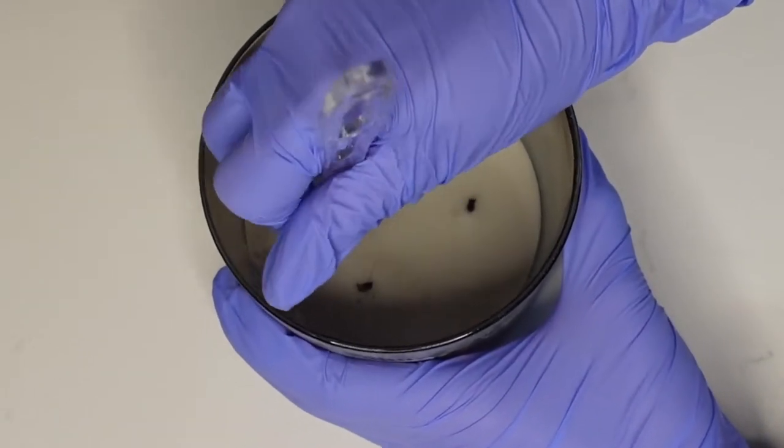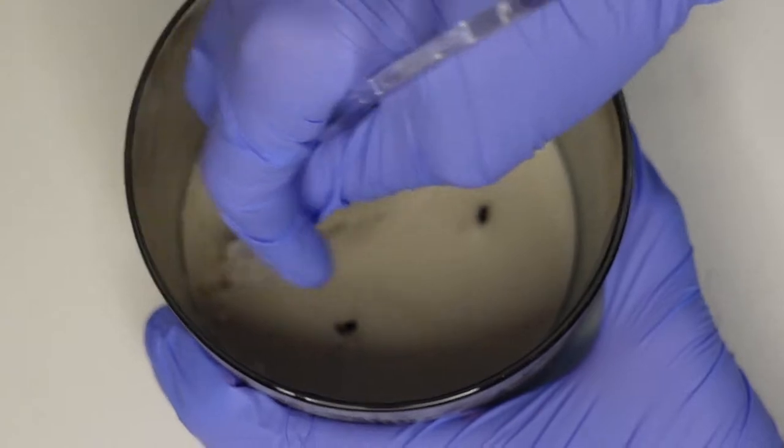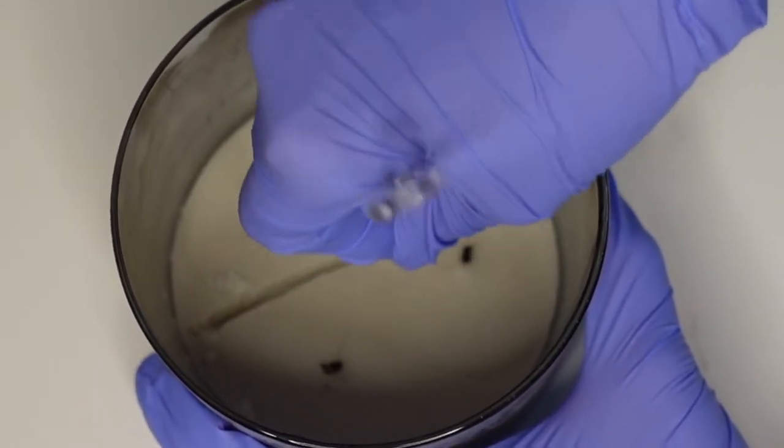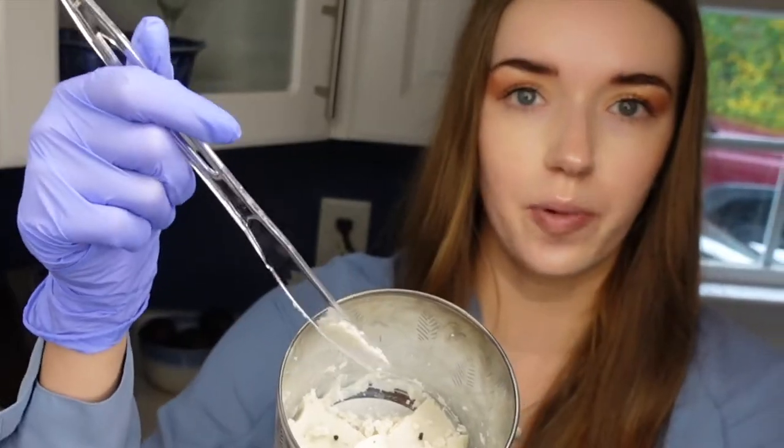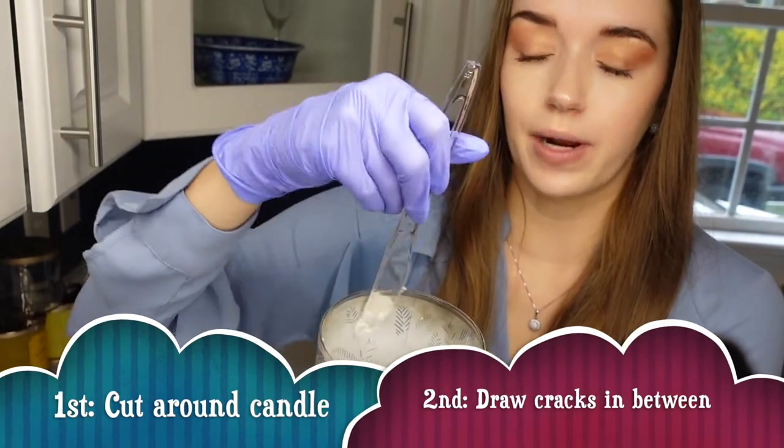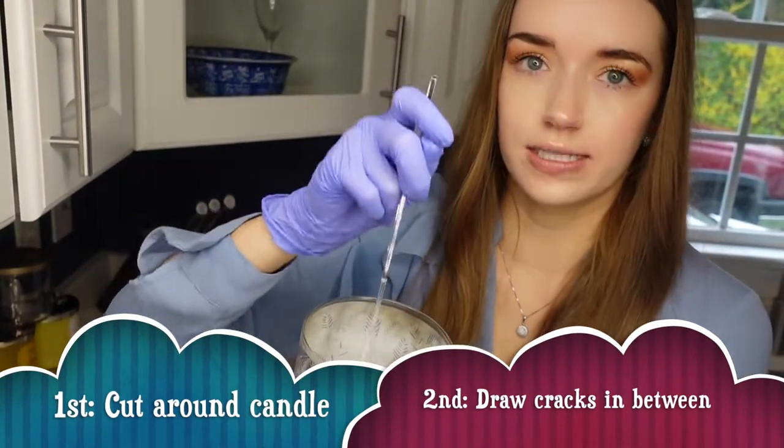This part's a little messy and you can kind of do it any way, but basically the idea is to break up the wax. So here's what it looks like now. You can see that a piece already popped itself out. So what I do is I take the knife, I go around the whole entire circumference of the candle, and then I draw some cracks in between.